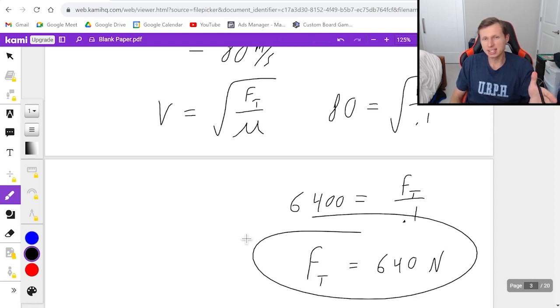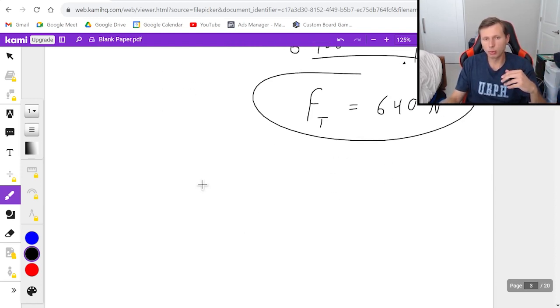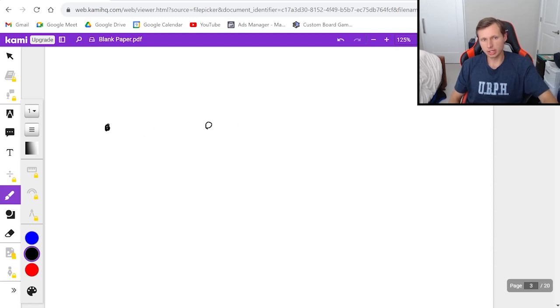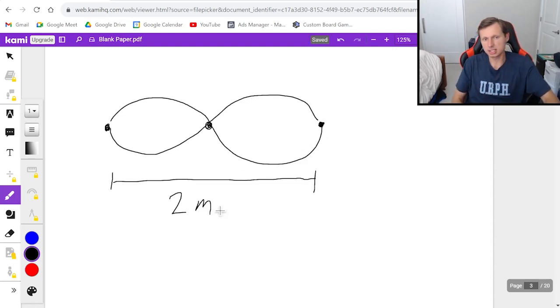Hopefully that made sense. Let's go ahead and just do one more. For this next physical string, this time I'm going to have three nodes and it's going to look like this. I'm going to say the same length and the same mass as before.